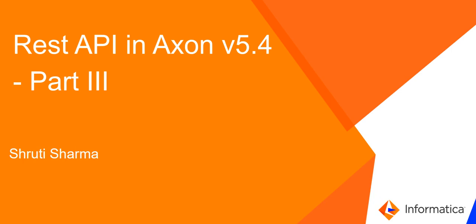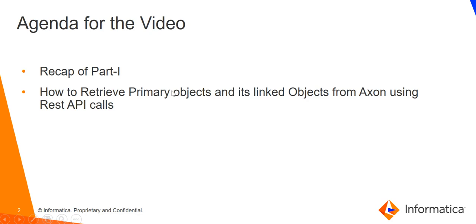Hello everyone, welcome to the Informatica support video. This is Shruti from Informatica GCS. In this video we will discuss how to retrieve primary objects from Axon and the objects that are linked with that primary object using REST API calls. In this video we will first have a quick recap of Part 1 of this Axon REST API video, and thereafter we will see how to retrieve primary objects and their linked objects from Axon.